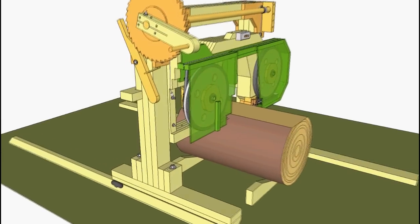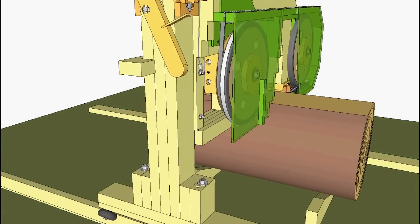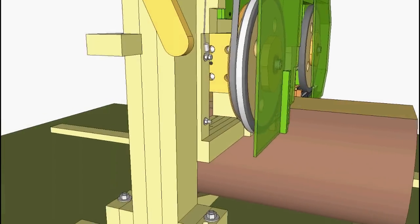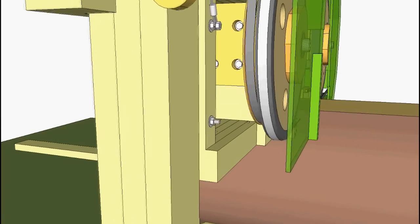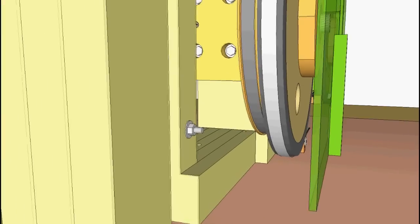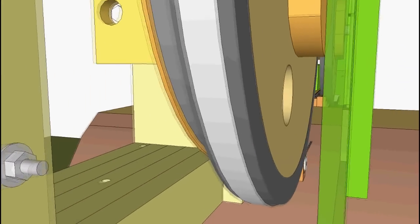This is a fly-through of my bandsaw sawmill CAD model. We're going to fly through what is normally the bottom of the case if it was upright. You can see here the lower wheel and the blade on it.